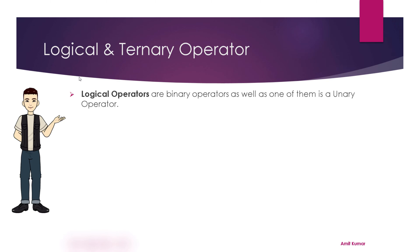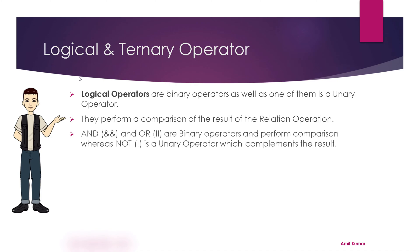Logical operators are also binary operators, but one of the logical operators is unary as well, so we can say they are binary as well as unary. They perform a comparison of the result of relational operations. Whenever you want to combine more than one relational operation, a logical operator comes into play. AND and OR are binary operators that perform comparison, whereas NOT is a unary operator which complements the result.